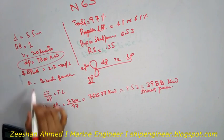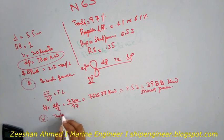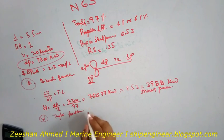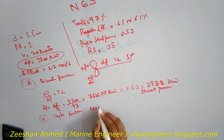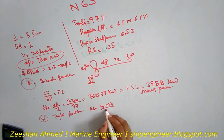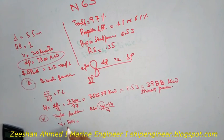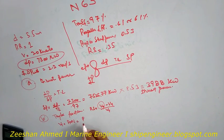For Part B we need to find the wake fraction. For the wake fraction we use the real slip formula: real slip equals VT minus VA over VT, where VT is the theoretical velocity and VA is the speed of advance. We need to find VT. VT equals pitch P multiplied by shaft speed N.